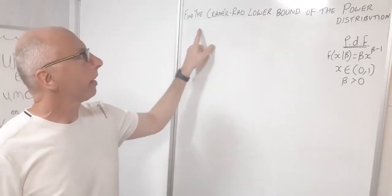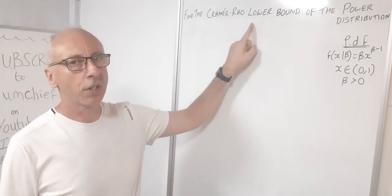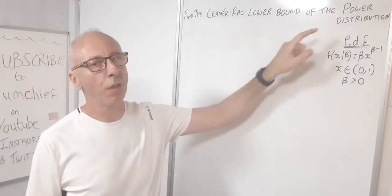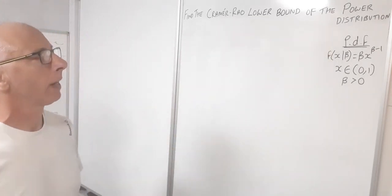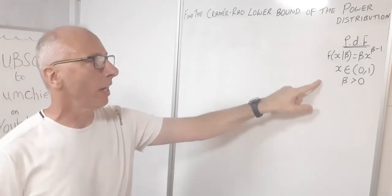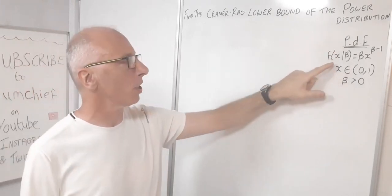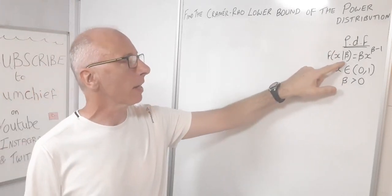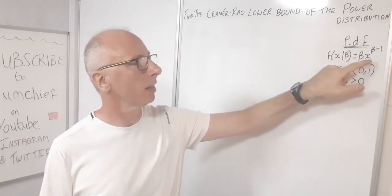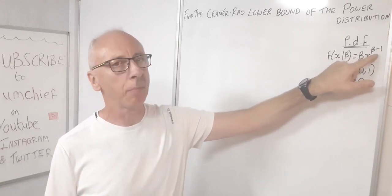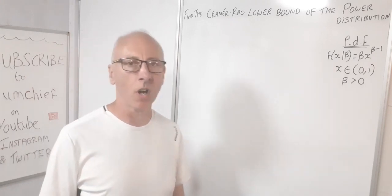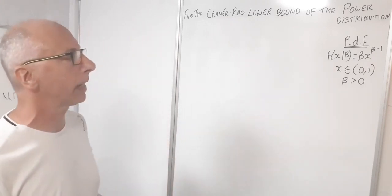We've got the question here and it says to find the Cramér-Rao lower bound of the power distribution. The power distribution is given by the probability density function f(x|β) = β·x^(β-1). These are the parameters for x and β.